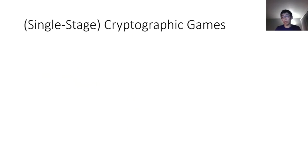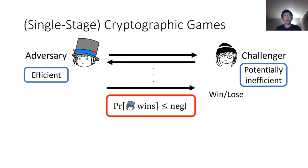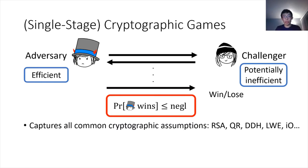In order to state our impossibility results, I'll have to define what a single-stage cryptographic game is. Such a game involves two parties — an adversary and a challenger — where the adversary is efficient but the challenger is not necessarily. At the end of the interaction, the challenger can decide whether the adversary won or lost the experiment. The assumption we rely on is that for all efficient adversaries, the probability of winning is negligible. This captures all common assumptions used in cryptography, including powerful ones such as IO.